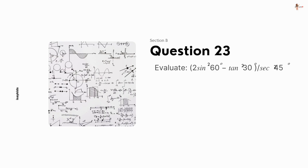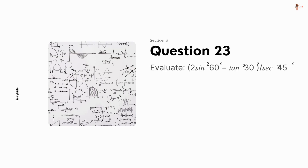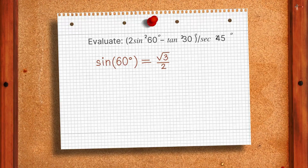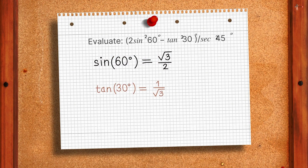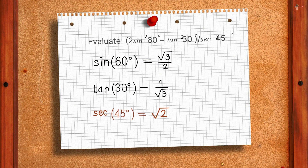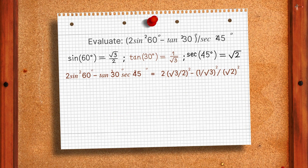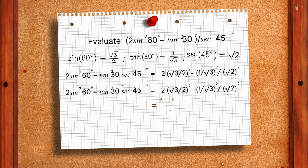Evaluate 2 sin squared 60 degrees minus tan squared 30 degrees divided by sec squared 45 degrees. Sin 60 is root 3 by 2, tan 30 is 1 by root 3, and sec 45 is root 2. Substituting the given values, we get 7 by 12.